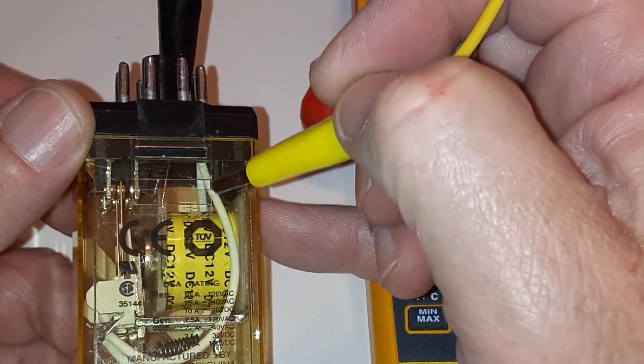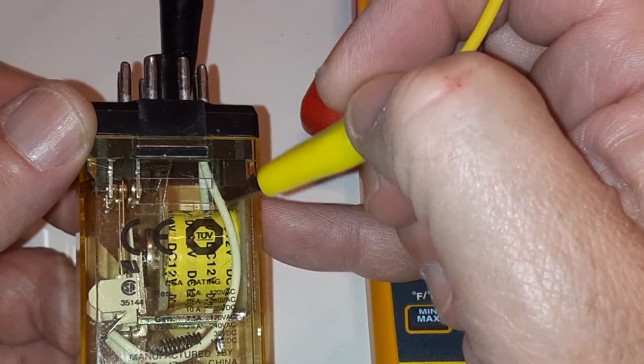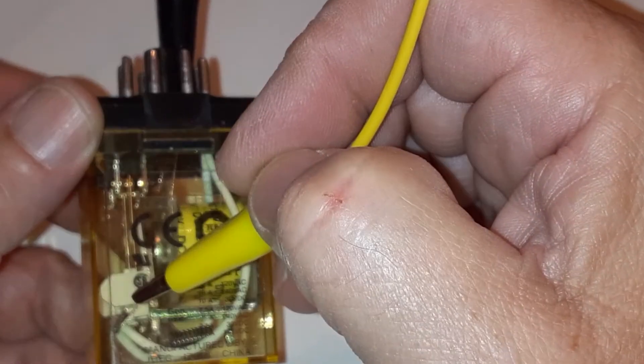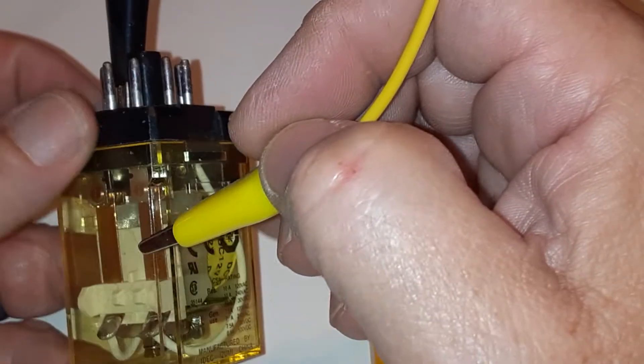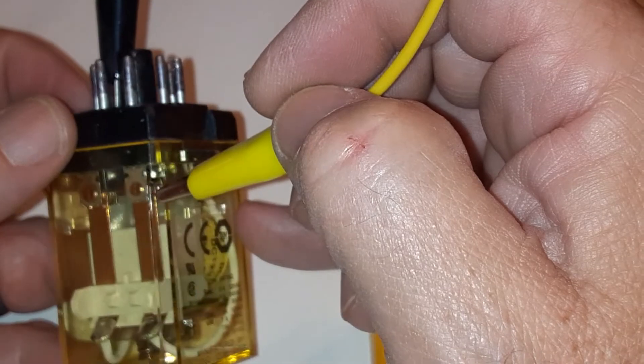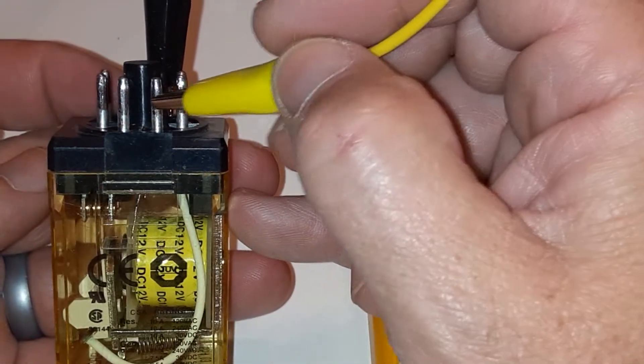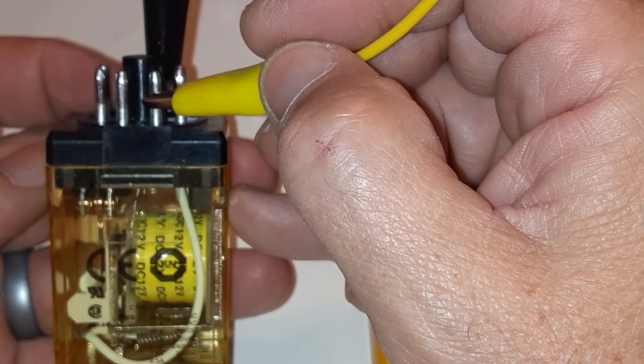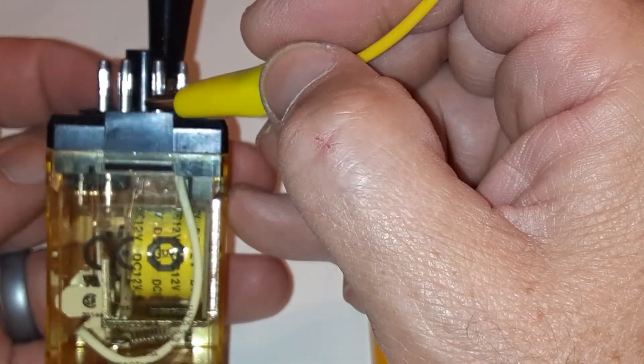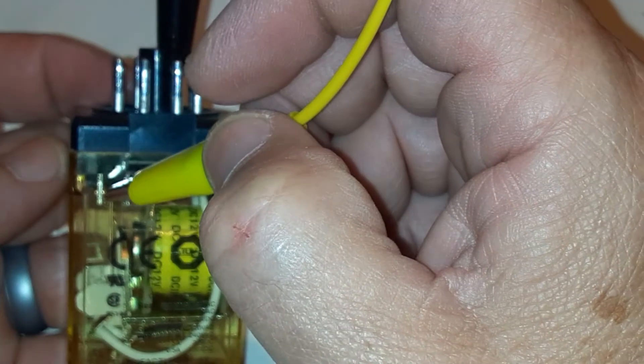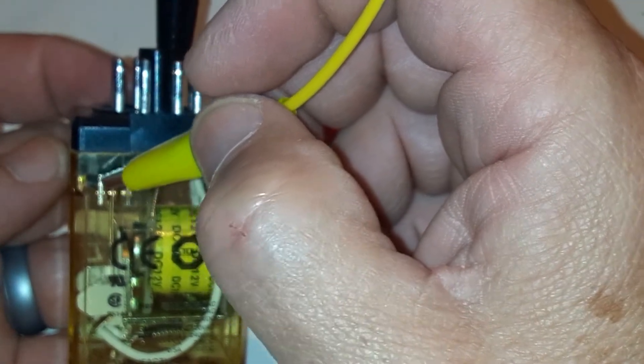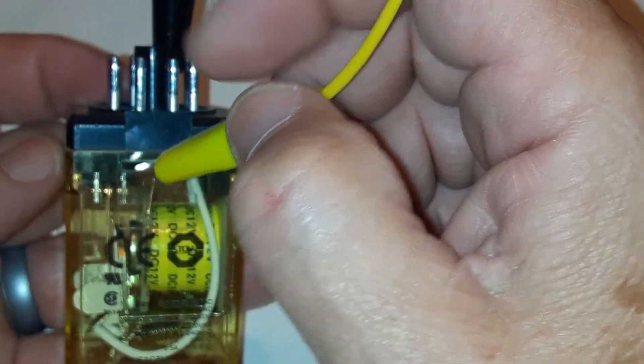The white wire is the common connection. It brings voltage up to the shiny tab here. The shiny tab has the contacts at the end of it, and this motion here connects and disconnects the circuit. You can see it's touching this side right here. That's the closed side. This is the open side.